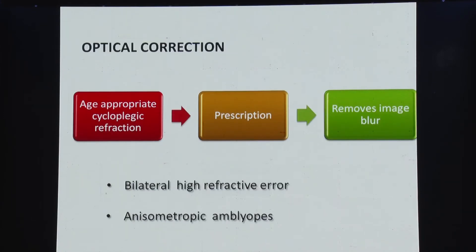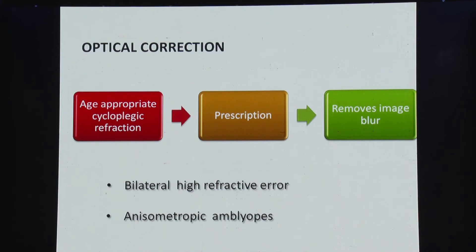Optical correction still remains the best stimulant for the eye to gain vision. Age-appropriate cycloplegic refraction can never be underestimated. A proper prescription — whether full cycloplegic correction, bifocals, or optimal correction — must be kept in mind when deciding the prescription for these patients. In bilateral refractive errors or ametropic amblyopia, it is the single most important treatment. In anisometropic amblyopia, vision has also been shown to improve with optical treatment alone — around 20–25% of patients will show improvement even without patching.